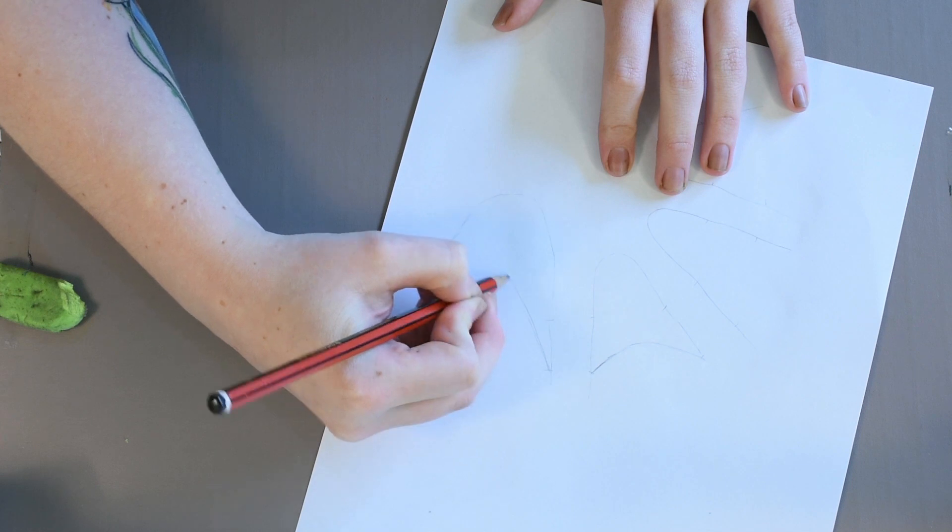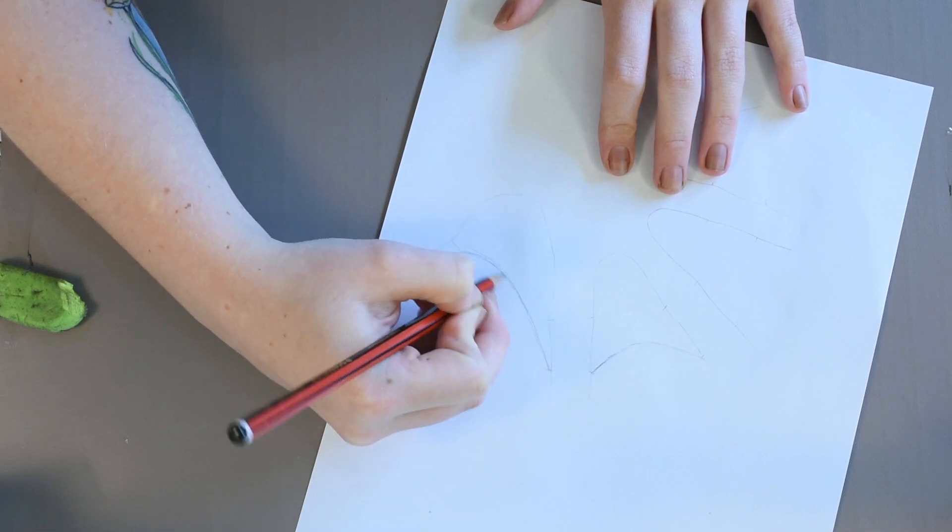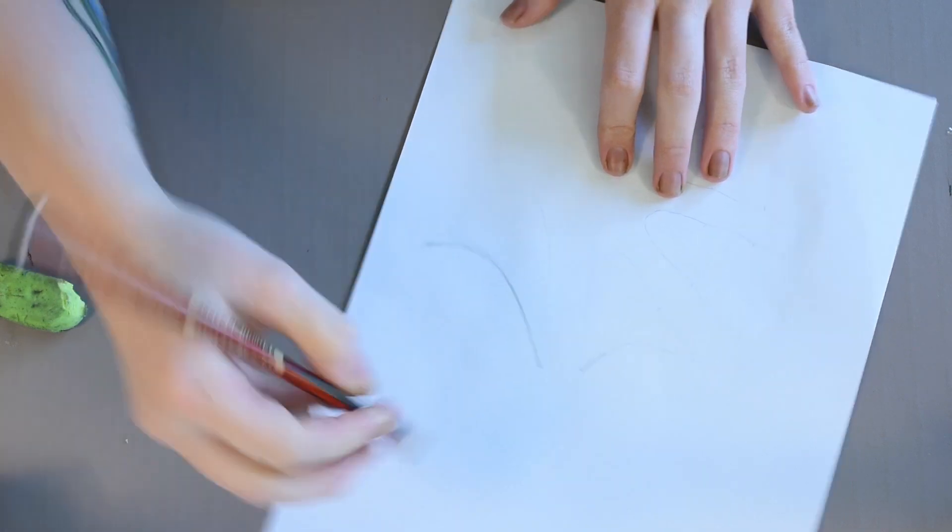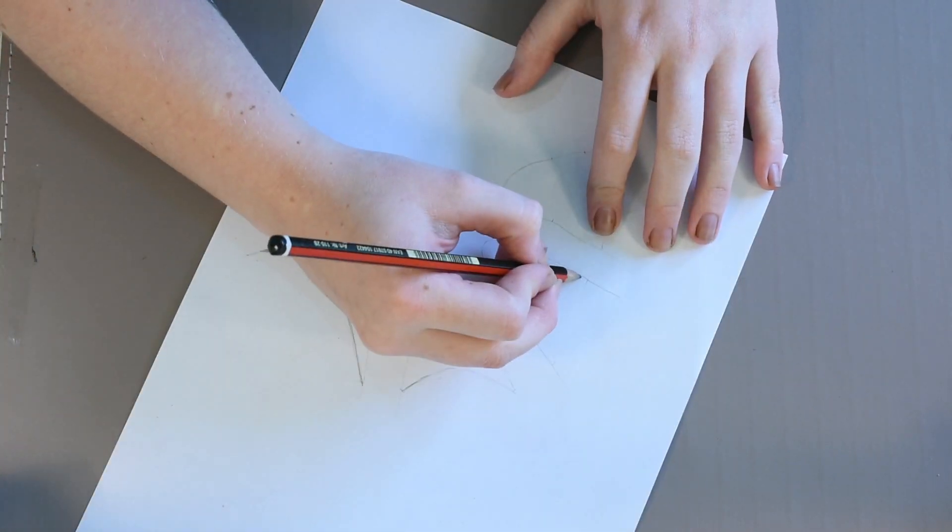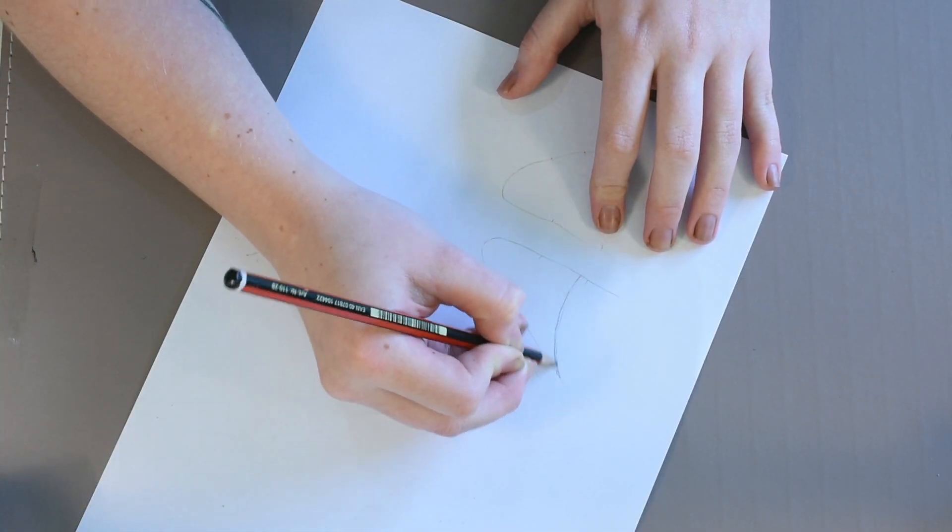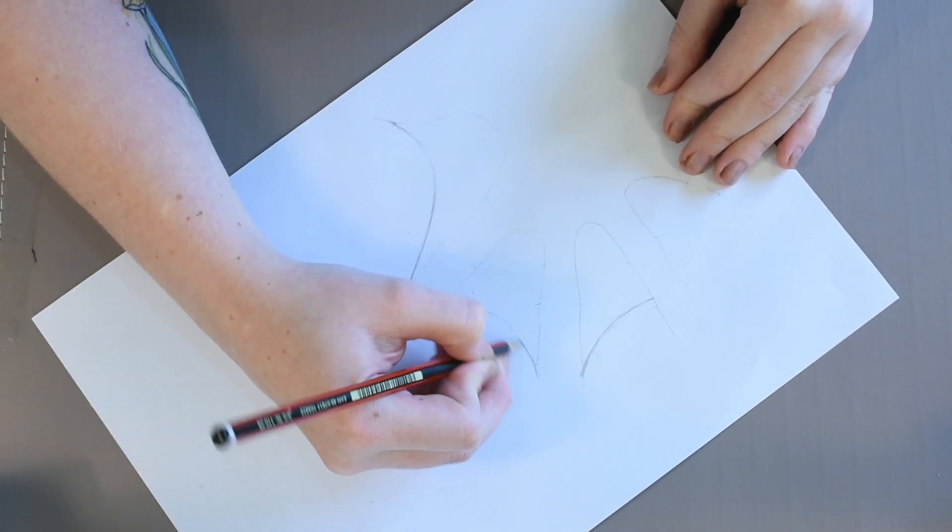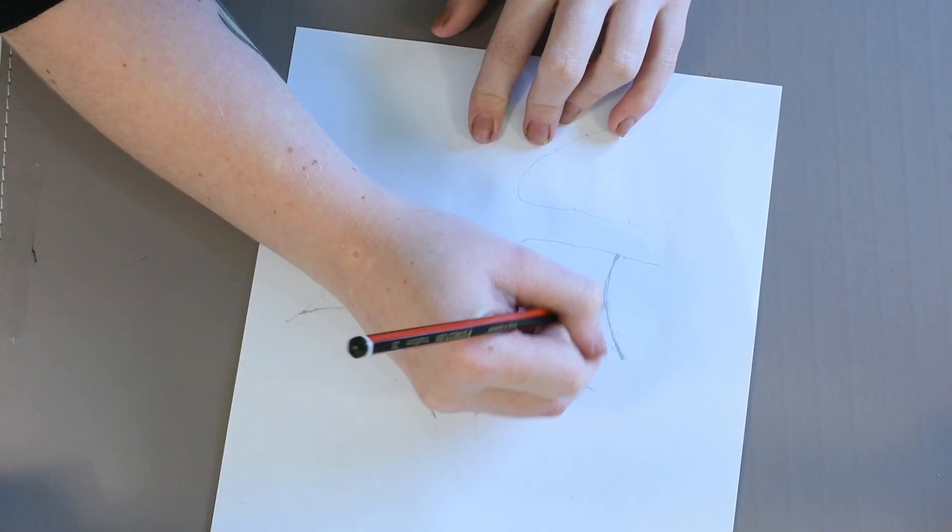Now you want to start joining the spaces together to create your web base. For this you can either use the basic shape I created or get creative. There are heaps of shapes that could work with this. Use the dots you placed by your knuckles to help place your web.